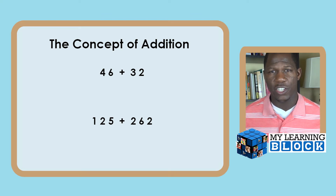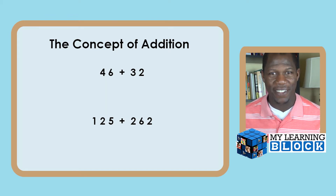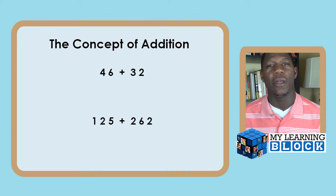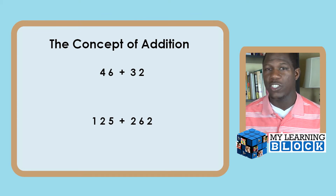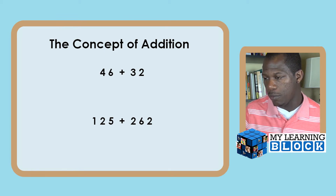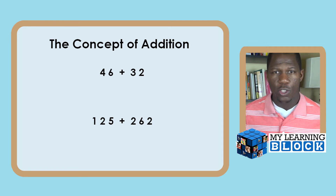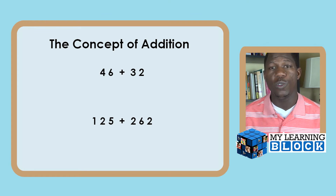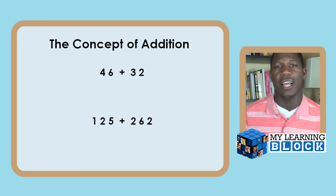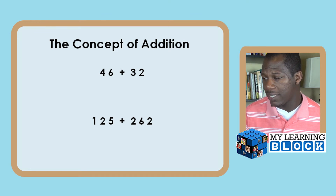Now your child is receiving work that looks like rods, flats, and units — that's a way to help them. But when they do switch over and start getting number sentences such as 46 plus 32 or 125 plus 262, you want to know how to help them work it out. Allow them to draw their flats, rods, and units.